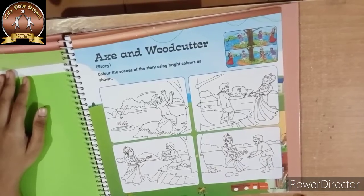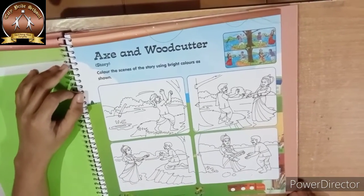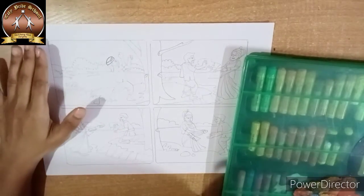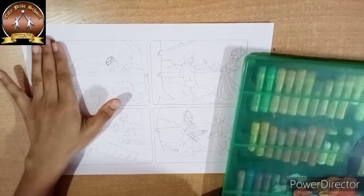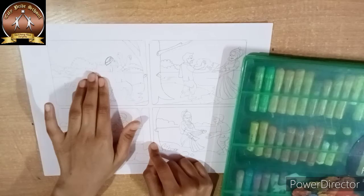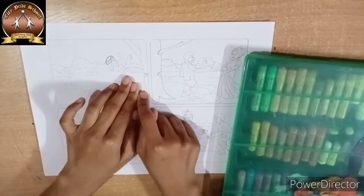Open page number 17. Here is the story given of axe and woodcutter, so we have to color. We will assume that light is coming from the left direction, so the left side will be in light tone, then the middle portion will be in middle tone, and the right direction will be in dark shade.